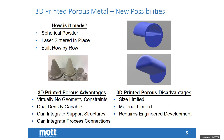Some advantages and disadvantages are listed at the bottom of the screen. The key advantage is that geometry constraints have really gone out the window — we can print complex geometries with multiple densities, switching layer after layer between solid stainless steel, very porous stainless steel, and very tight stainless steel. The 3D printer also allows us to integrate support structures and process connections directly into the part, eliminating complex joining methods such as electron beam welding.